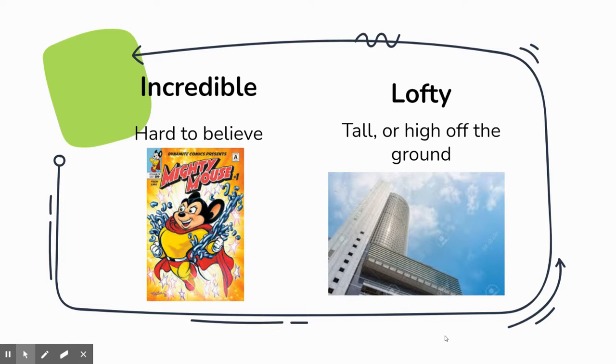The first two words are incredible and lofty. Incredible means hard to believe. I have a picture of Mighty Mouse, an old character who's a very strong mouse that would save people and animals. Here he is breaking through chains—that's hard to believe. Lofty means tall or high off the ground, so there is a very tall building.